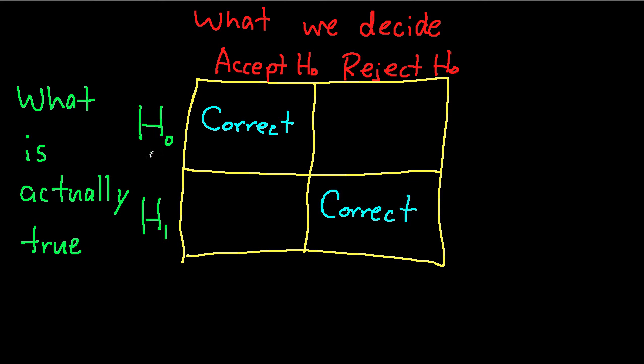If h0 is actually true, but our decision is to reject h0, then we've made an error. And we call this error a type 1 error.